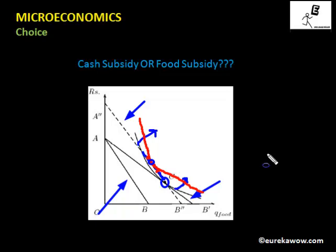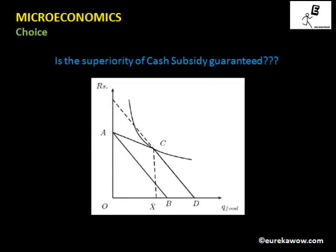Through this economic analysis, cash subsidy leaves the consumer on a higher indifference curve, and therefore cash subsidy is more efficient than food subsidy. However, this analysis was based on the assumption that the consumer gets food at subsidized rates for whatever quantity is consumed — that is, the government subsidizes all units. But this is not the case in India.